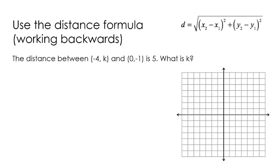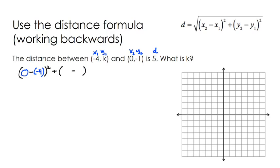I'm going to label my points to start off. I'll call these x1 and y1, and I'll call these x2 and y2, and that's obviously our distance. We're going to take these values and substitute them into our distance formula. So starting with x2 minus x1 squared, and then plus y2 minus y1 — that's negative 1 minus k — also squared, and that equals a distance of 5.